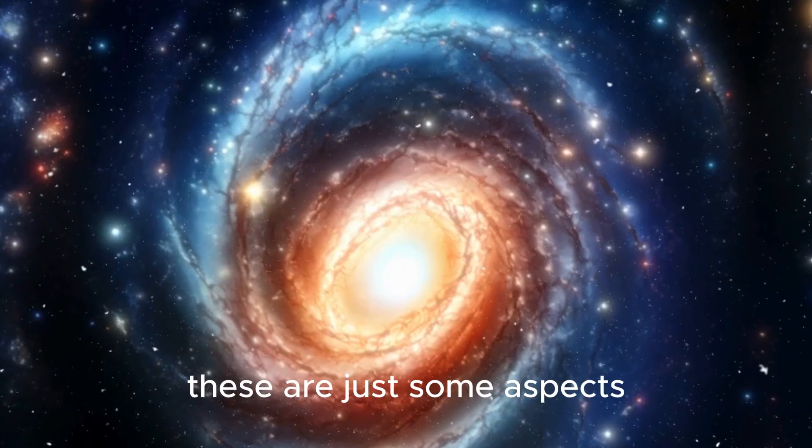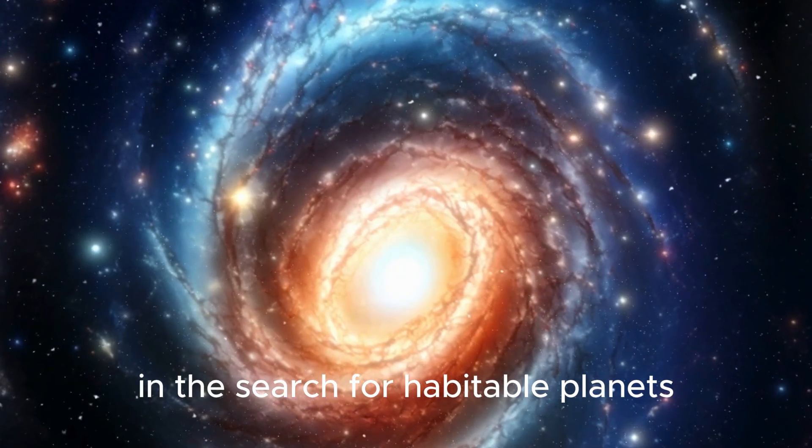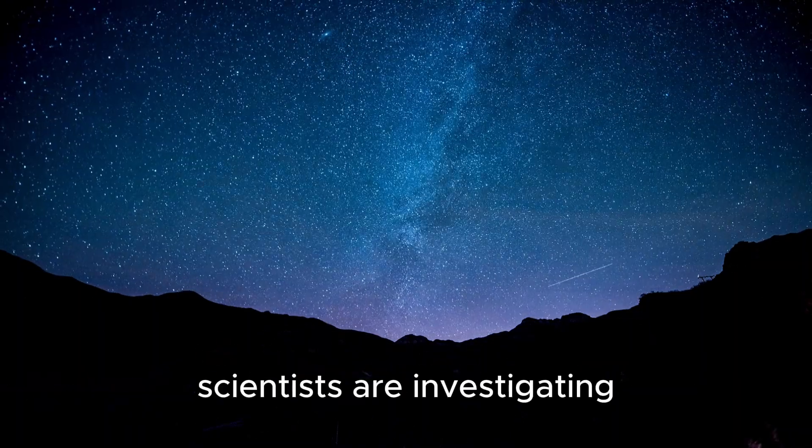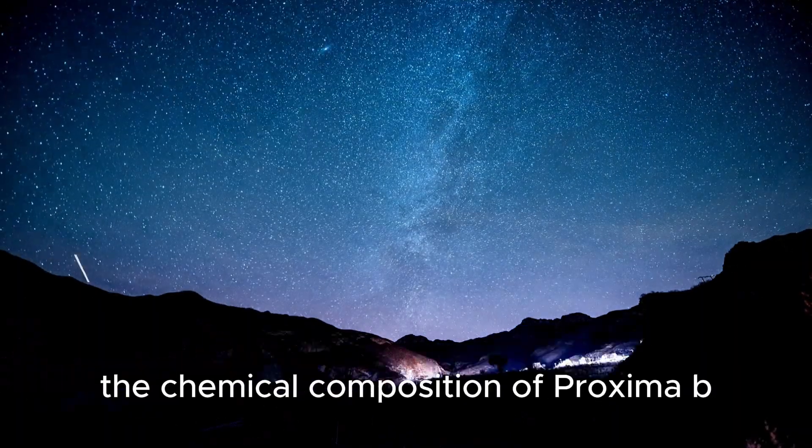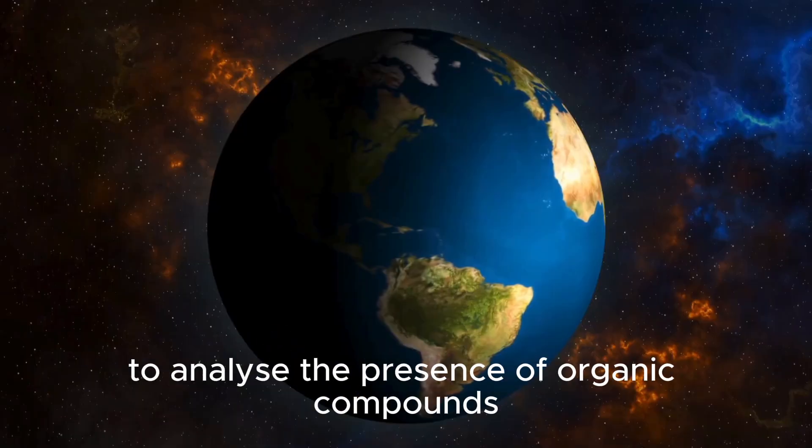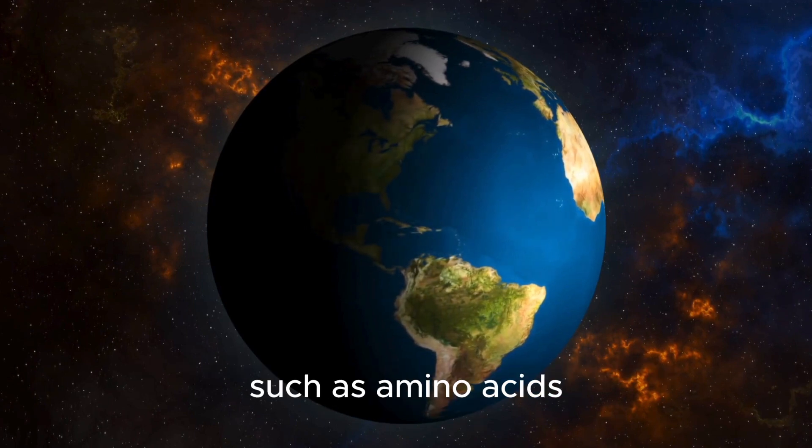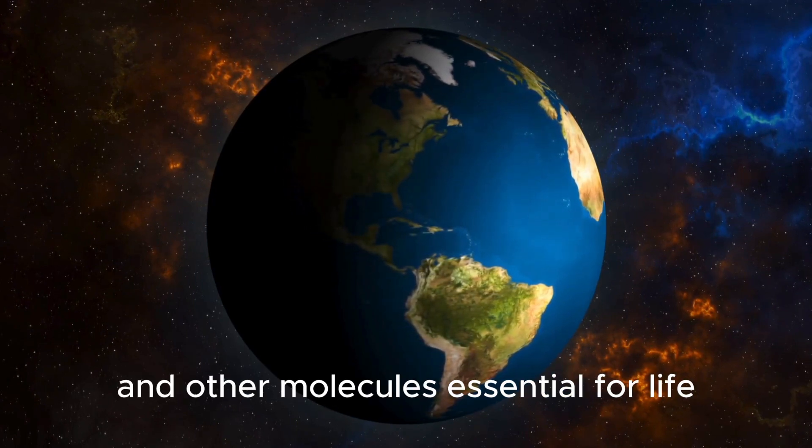These are just some aspects that scientists are considering in the search for habitable planets. Scientists are investigating the chemical composition of Proxima b to analyze the presence of organic compounds, such as amino acids and other molecules essential for life.